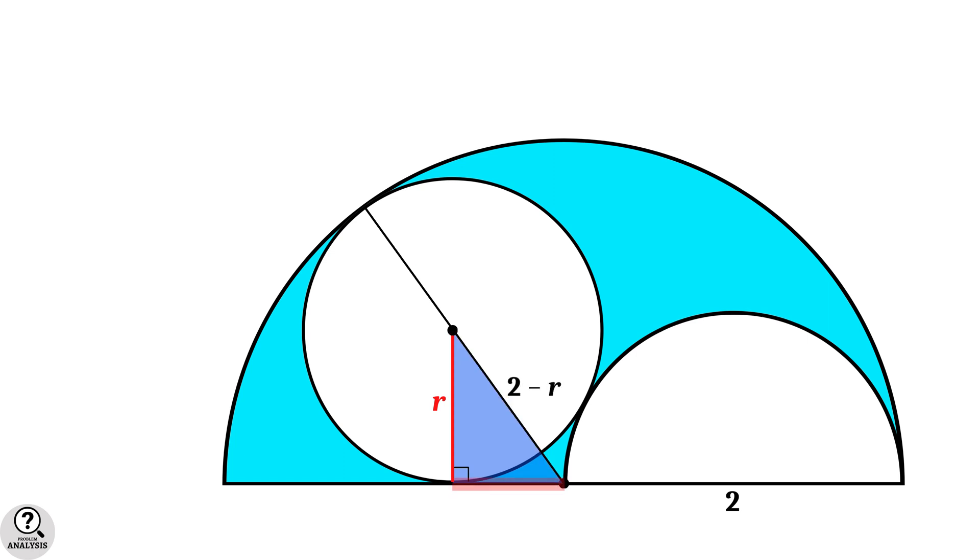Now suppose base length of the right triangle is X. Then by applying Pythagoras theorem, X square plus R square equal to 2 minus R whole square. That is equal to 4 minus 4R plus R square. R square is cancelled out, and we get X square is equal to 4 minus 4R.